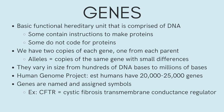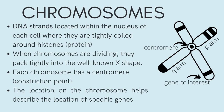Scientists keep track of genes by giving them unique names. Because gene names can be long, genes are also assigned symbols, which are short combinations of letters and numbers that represent an abbreviated version of the gene name. For example, a gene on chromosome 7 that has been associated with cystic fibrosis is called the cystic fibrosis transmembrane conductance regulator, with the symbol CFTR.